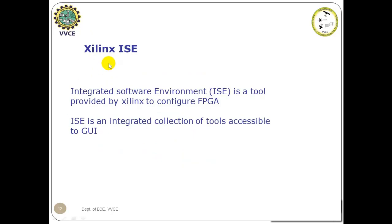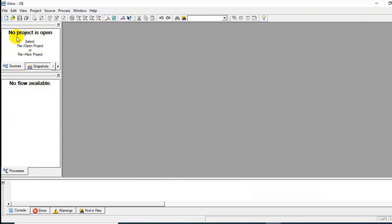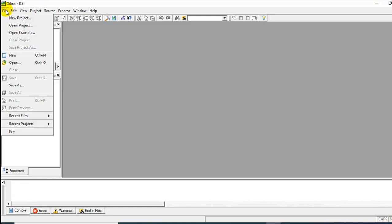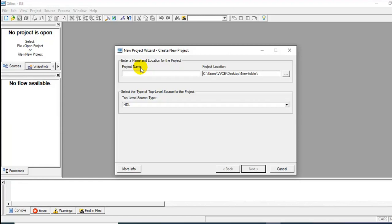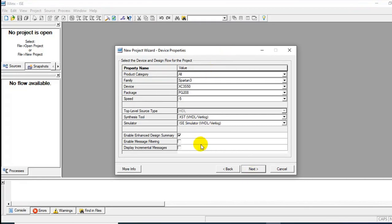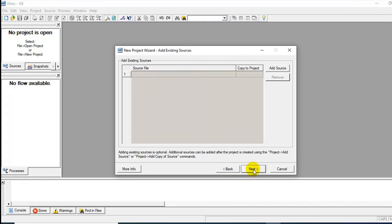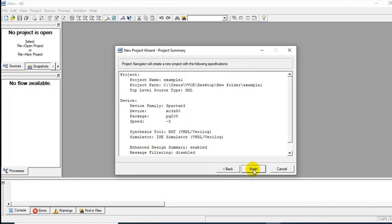The design is simulated using Xilinx ISE tool. Integrated software environment is a tool provided by Xilinx to configure FPGA. ISE is an integrated collection of tools accessible to GUI. Next, let us enter the design and simulate the tool. Let us first invoke the tool. This is the source window. This is the process window. The first step is to create a new project. We'll go to the option file, new project. Enter the name for the new project. Check the specifications. The FPGA family is Spartan 3. The device is XC3S50. Finish creating the new project.